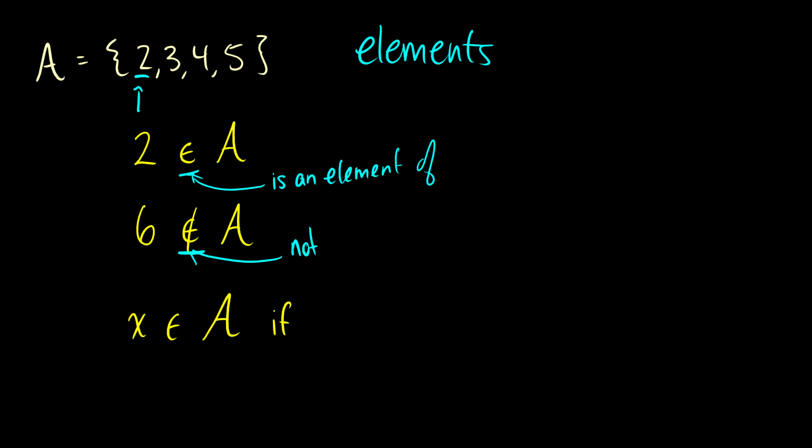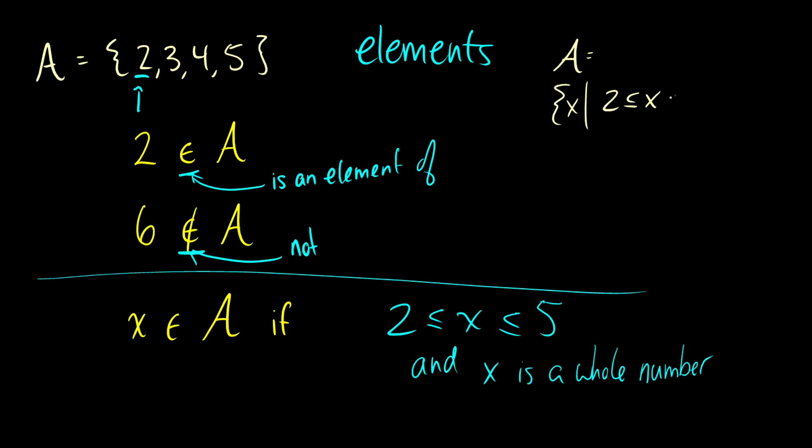When we have this epsilon with a cross in it, what this means is not an element of A. So 6 is not in the set A. And what we can do is we can give this set some conditions. So for instance, we can say that x is going to be in this set A if x is between 2 and 5 and x is a whole number or x is an integer or something like that.